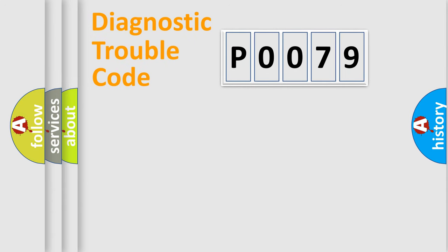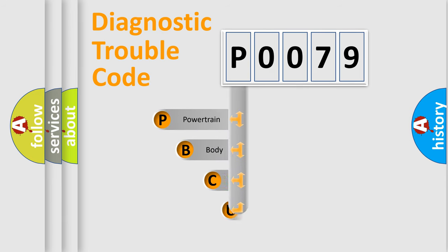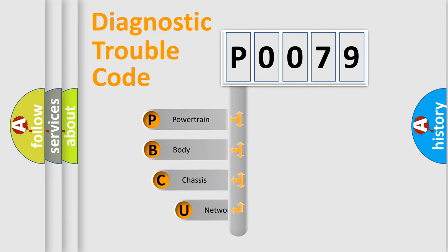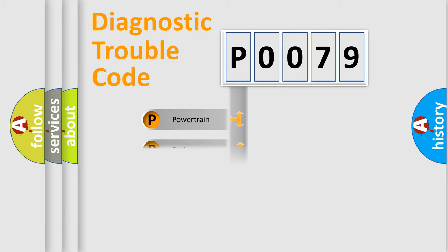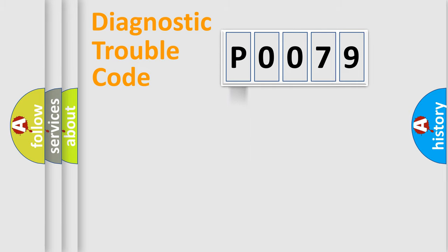Let's do this. First, let's look at the history of diagnostic fault code composition according to the OBD2 protocol, which is unified for all automakers since 2000. We divide the electric system of automobile into four basic units: Powertrain, body, chassis, and network.